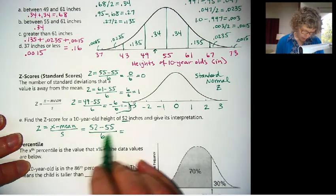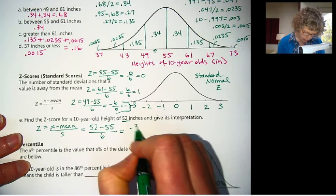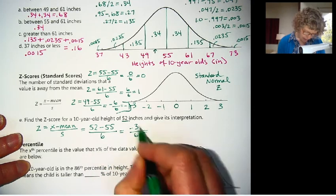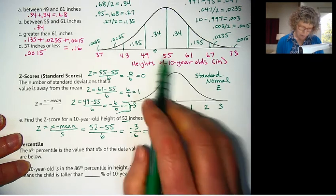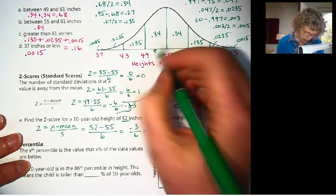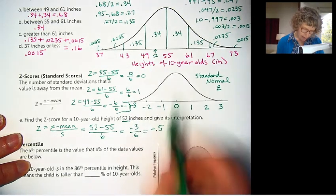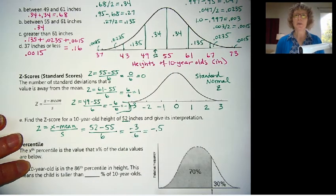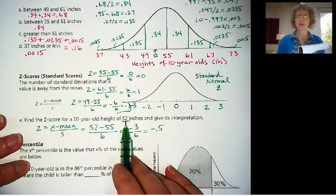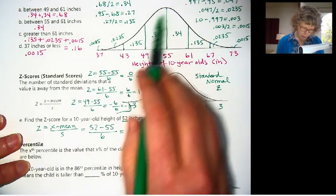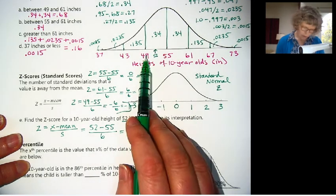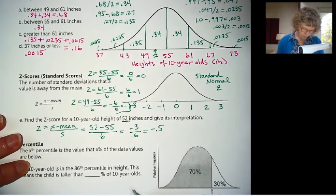Okay, so let's do an example where we find the z-score for a 10-year-old with a height of 52 inches. So z equals x minus the mean, just going to write the formula down, over the standard deviation. And that is our value, is what we're looking for, that particular person. 52 inches, minus the mean is 55, over the standard deviation of 6.